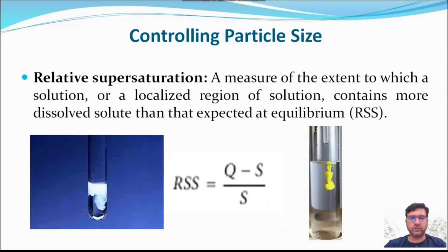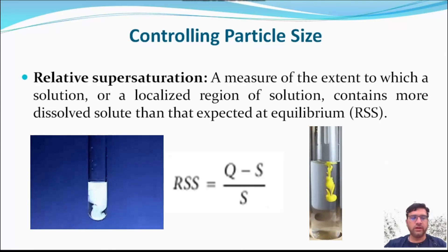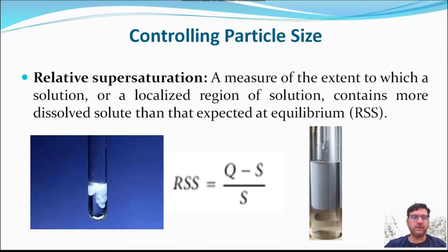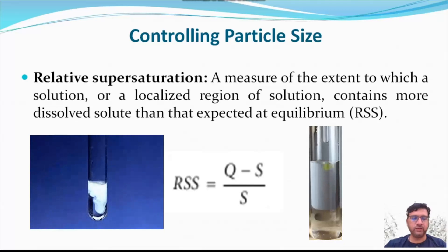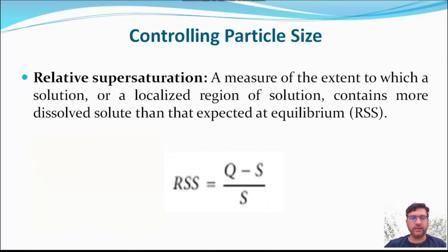Relative supersaturation is a measure of the extent to which a solution or localized region of solution contains more dissolved solute than expected at equilibrium. Here, Q is the solute's actual concentration, S is the solute concentration at equilibrium, and Q minus S is a measure of solute supersaturation when precipitation begins. A larger positive value of RSS (relative supersaturation) means the solution is supersaturated, giving a high rate of nucleation, while a small RSS means precipitation is more likely to occur by particle growth.